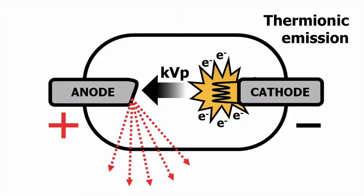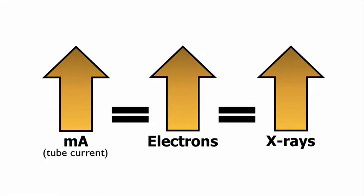The number of x-rays and the energy of x-rays are actually controlled by you, the technologist, using the MA and the KVP. Increasing the MA, or the tube current, increases the number of electrons produced in the x-ray tube. Increasing the number of electrons increases the number of x-ray photons, and this is the idea of intensity.